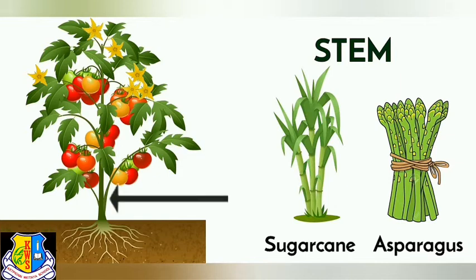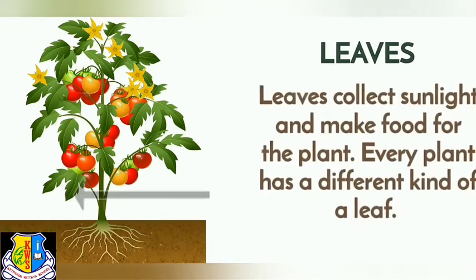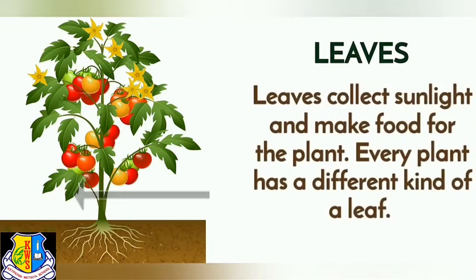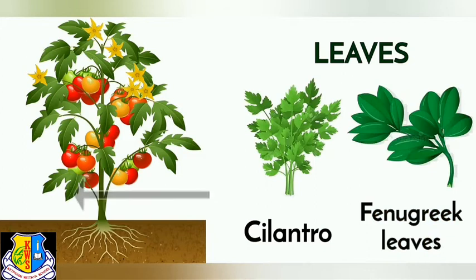Leaves. Leaves collect sunlight and make food for the plant. Every plant has a different kind of leaf. Some examples of leaves we eat are cilantro and fenugreek leaves.